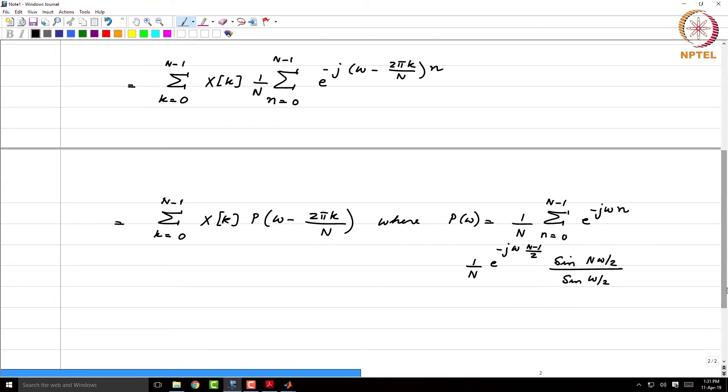So, what is happening here is, remember on the left hand side we have x of e to the j omega. So what we are doing is we are taking the samples X of k which are known only at spacings of 2 pi by N apart. So these are the samples of the DTFT.